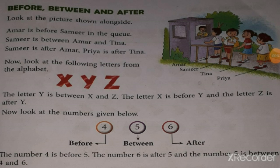Before, between, and after. Look at the picture shown alongside. Amar is before Samir in the queue. Samir is between Amar and Tina. Samir is after Amar. Priya is after Tina. Now look at the following letters from the alphabet: X, Y, Z. The letter Y is between X and Z. The letter X is before Y. And the letter Z is after Y.